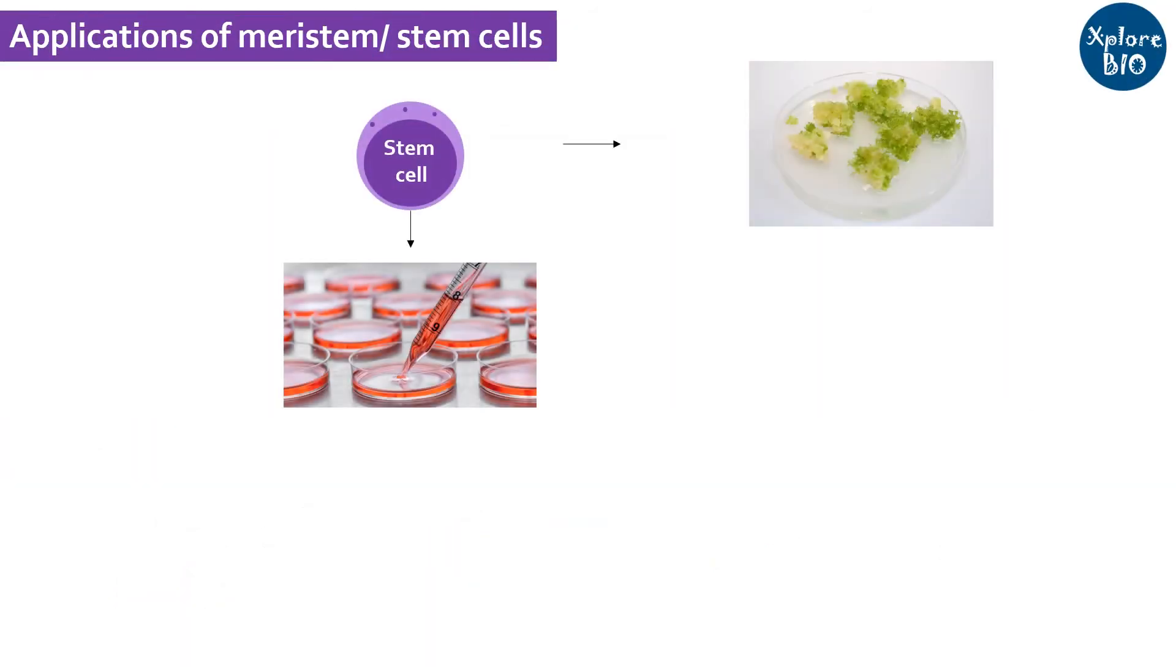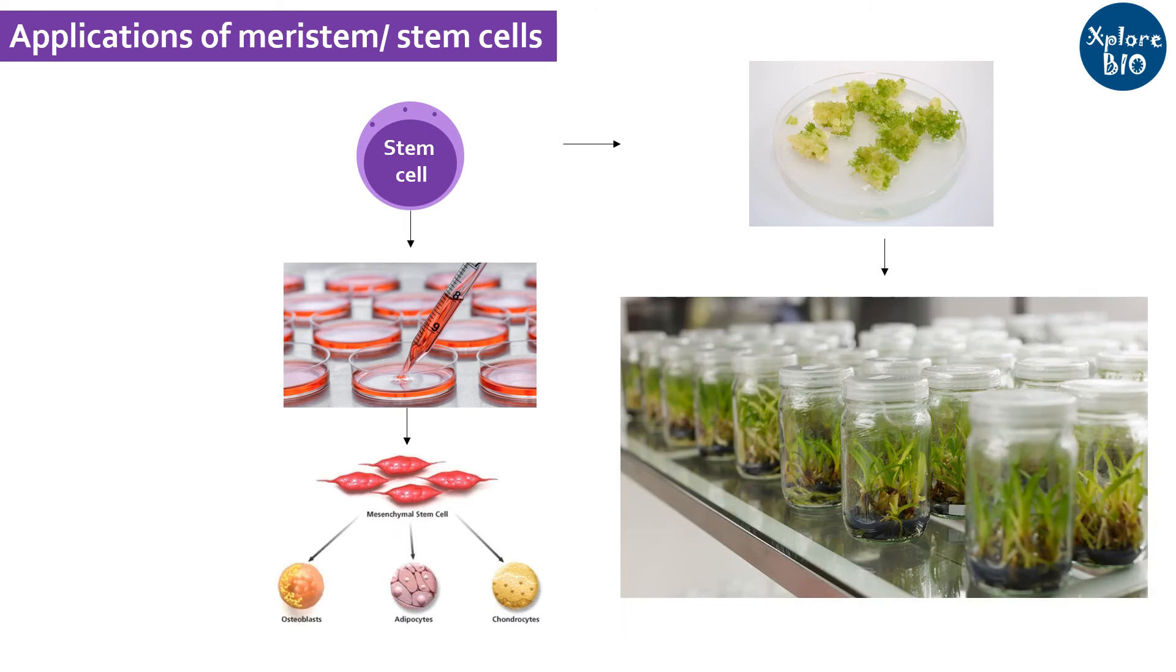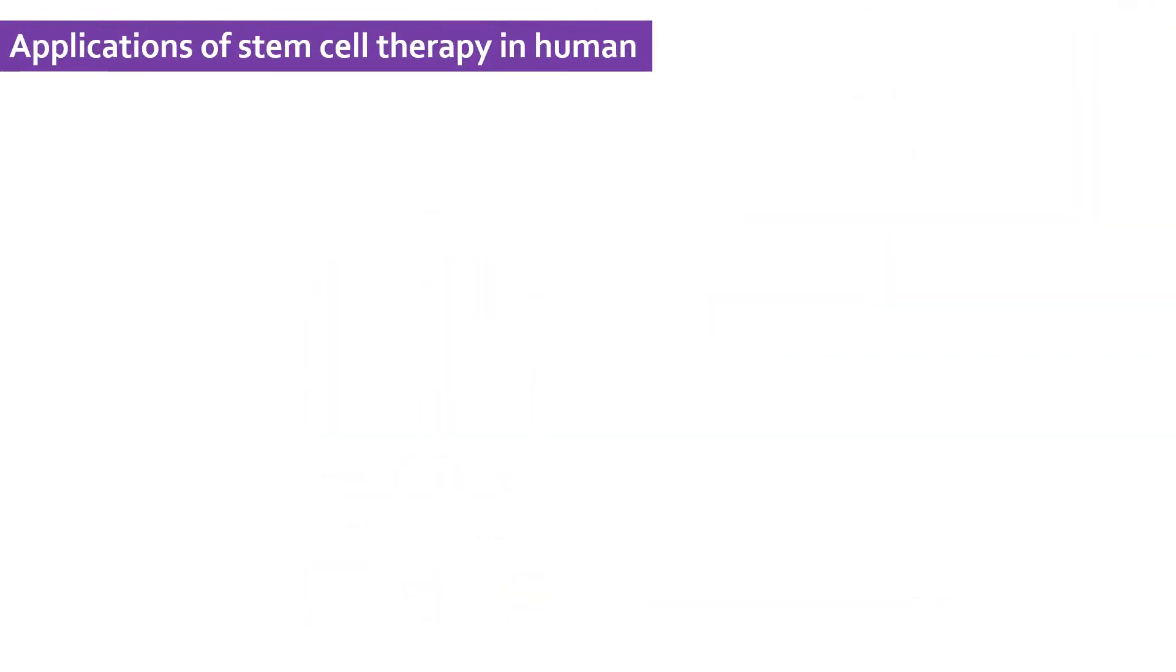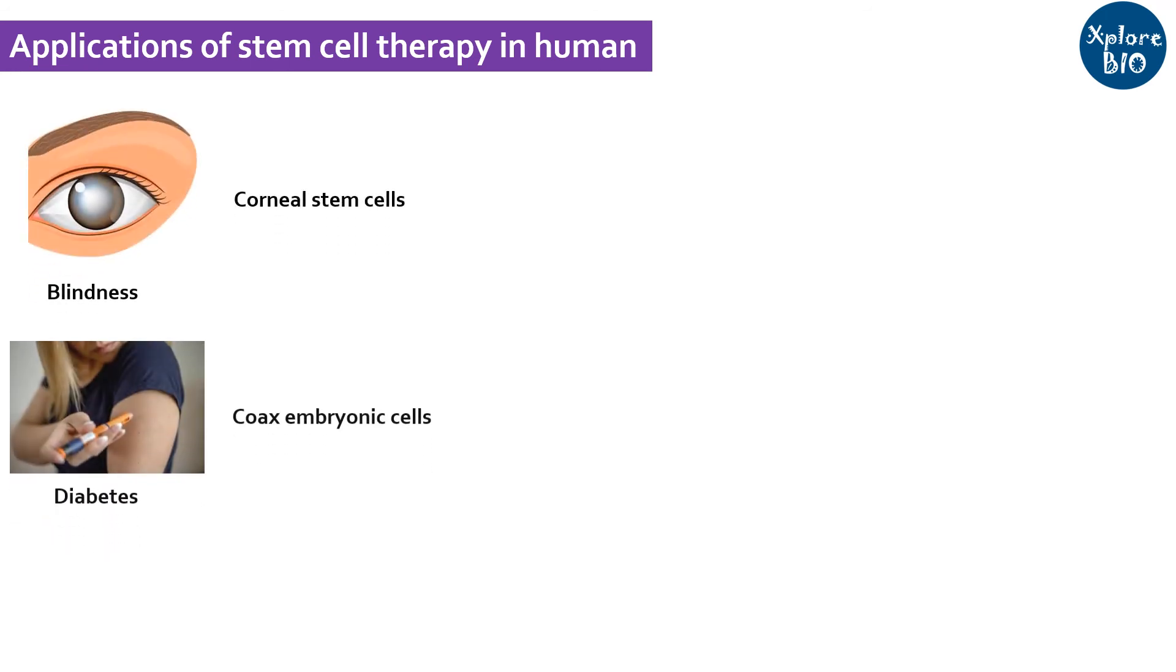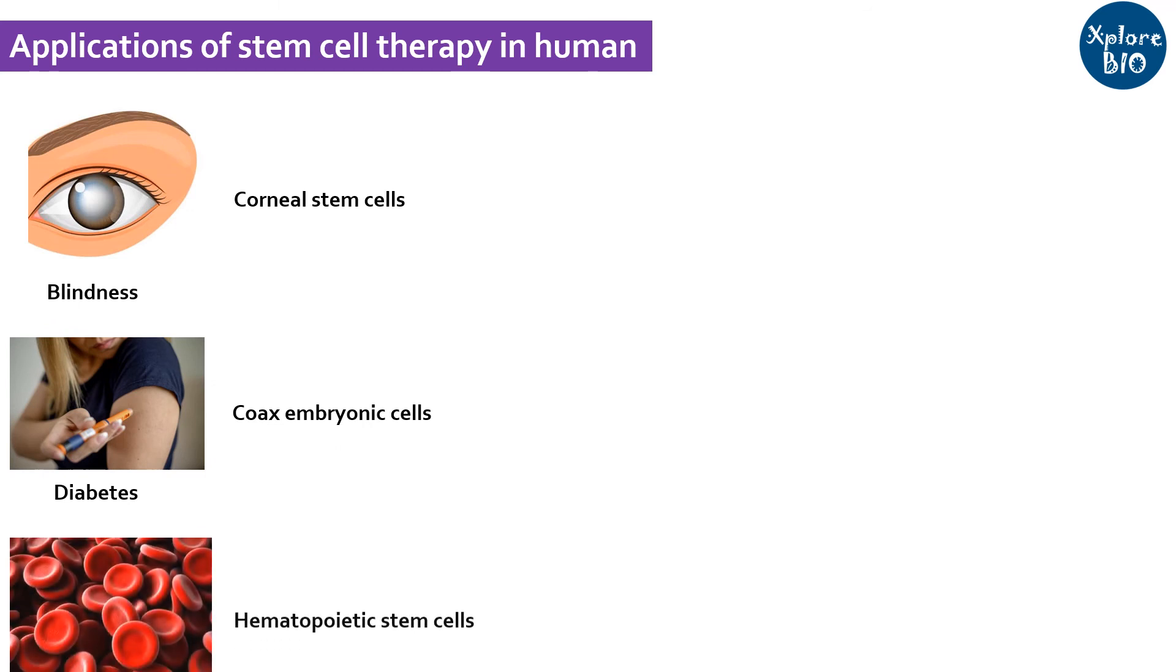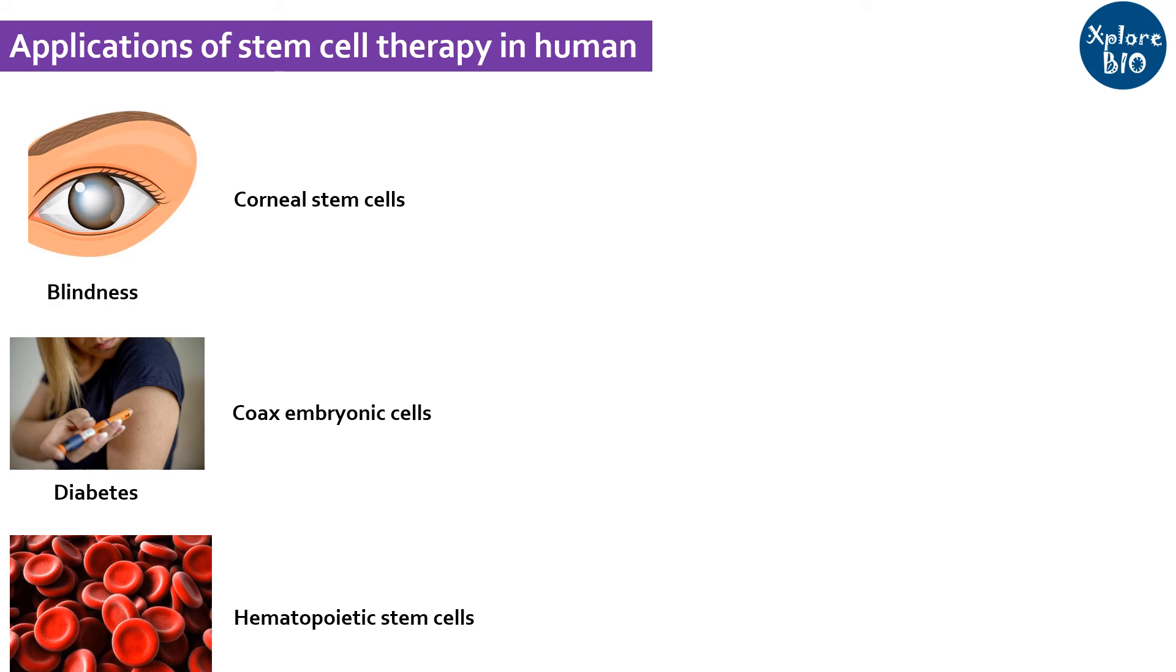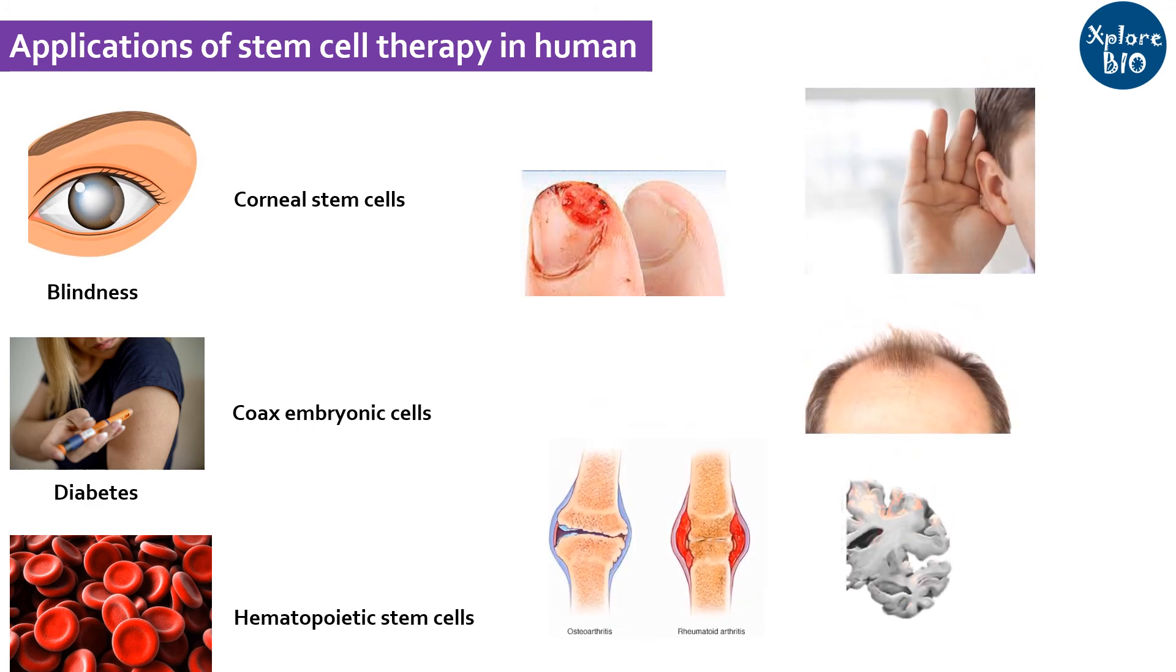Providing a suitable environment, a stem cell or meristem cell can differentiate to highly specialized cell type which has huge application in restoring human health and plant industries that I am going to discuss in a moment. In humans, studies have shown promising applications of stem cells in curing blindness using corneal stem cells, treating diabetes type 1 by producing beta cells from embryonic stem cells, producing RBCs from hematopoietic stem cells. Other than this, it has huge potential in speeding up wound healing, restoring hearing ability, curing baldness, treating arthritis, neurodegenerative diseases and others.